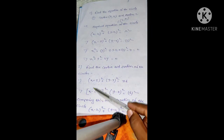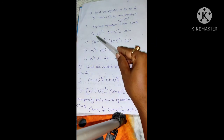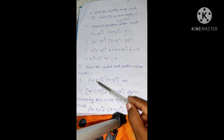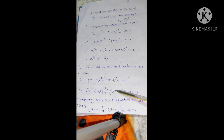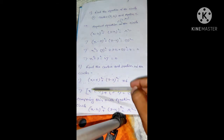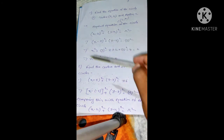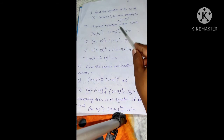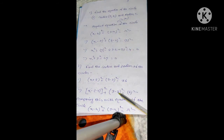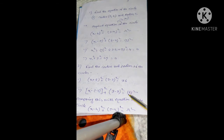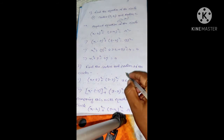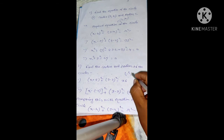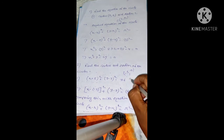I write x minus (minus 5) squared, because minus times minus gives plus 5, then y minus 3 squared. And 36 can be written as 6 squared. Now comparing these two equations, x minus h squared means h equals minus 5; y minus k squared means k equals 3; and r squared means r equals 6. So the coordinate of the center is (minus 5, 3) and the radius is 6.